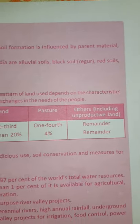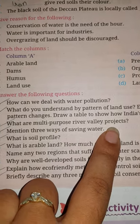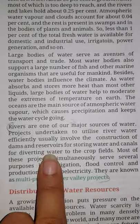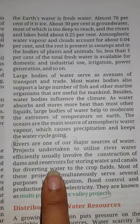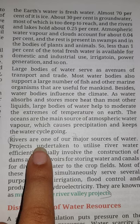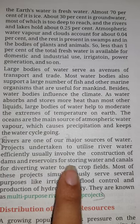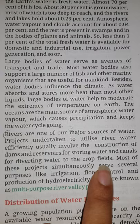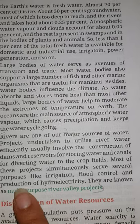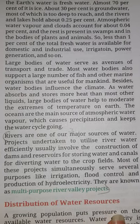Now see question number 3: What are multipurpose river valley projects? Your answer is given on page number 11, third paragraph — write the whole paragraph. Rivers are one of the major sources of water. Projects undertaken to utilize river water efficiently usually involve the construction of dams and reservoirs for storing water and canals for diverting water to crop fields. Most of these projects simultaneously serve several purposes like irrigation, flood control and production of hydroelectricity. They are known as multipurpose river valley projects.